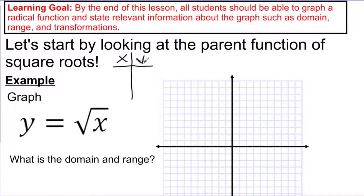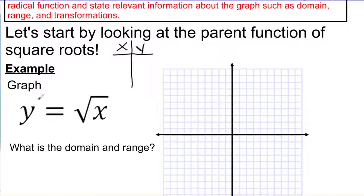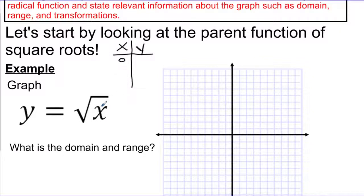The issue is that I can't plug whatever I want in for x. I could plug in 0 — the square root of 0 is 0 — so I can put the point (0, 0) on my graph.